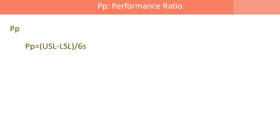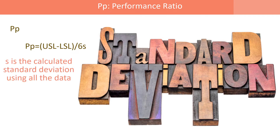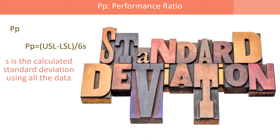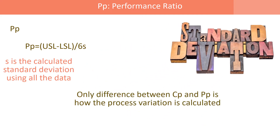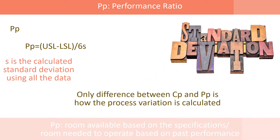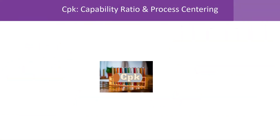PP is the performance ratio. Very similar — it's based on the upper spec minus the lower spec divided by six times S, where S is the calculated standard deviation using all the data. The only difference between CP and PP is how the process variation is calculated. Again, it's room based on specifications divided by the room needed to operate, in this case based on past performance since we're using S.